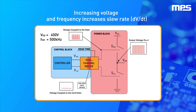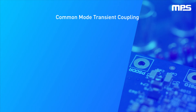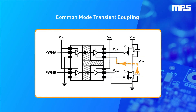Common Mode Transient Isolation, or CMTI, protects the circuit by stopping these high-frequency voltage components from coupling past the isolation barrier. As bus voltages and switching frequencies increase, CMTI is becoming more and more important in gate drivers, which is why MPS's robust gate drivers have over 100 volts per nanosecond of CMTI.